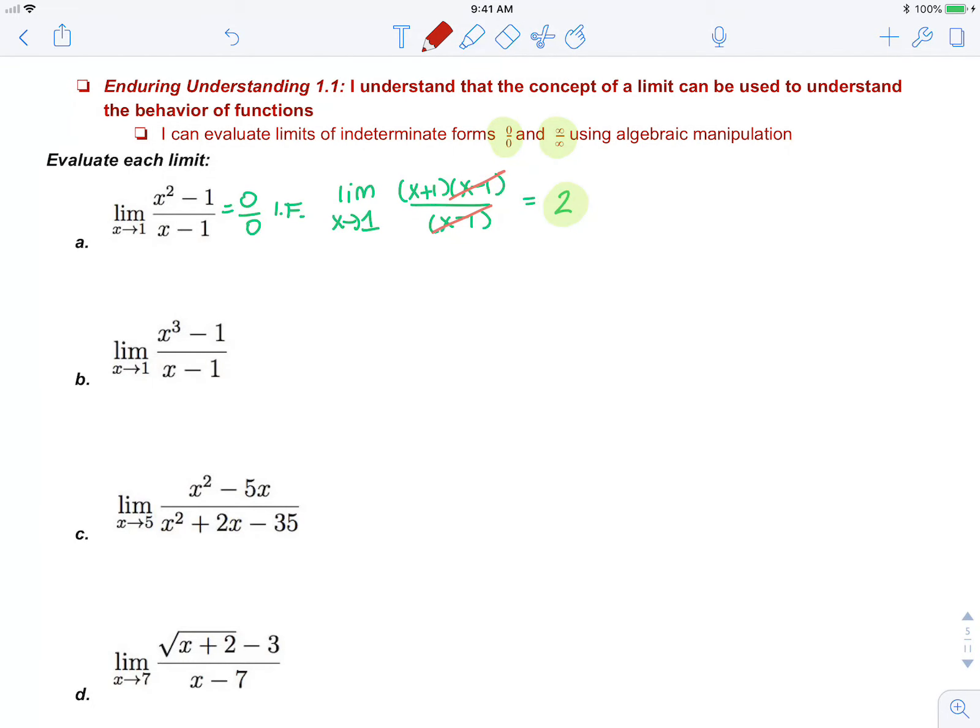Next, in Part B, if I plug in 1, I get 0 over 0, which is an indeterminate form. So that means I can do some algebraic manipulation.